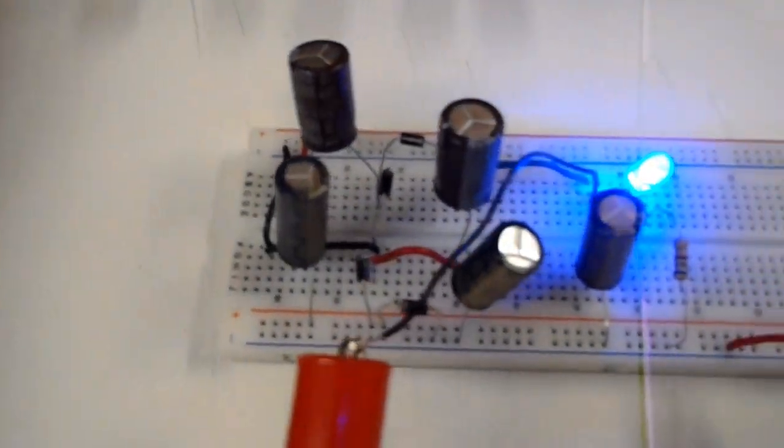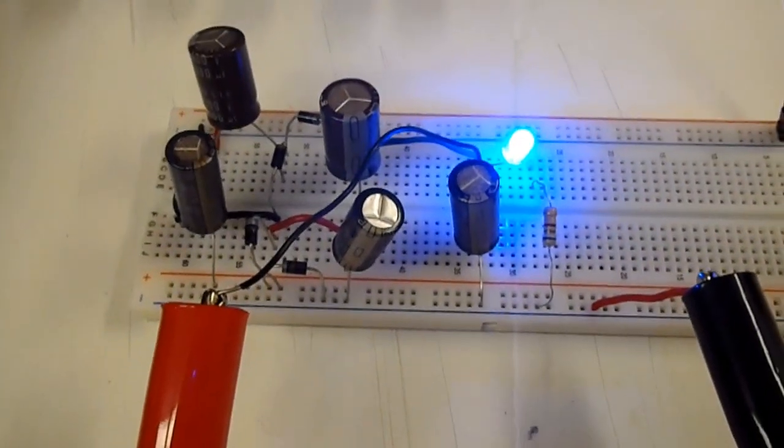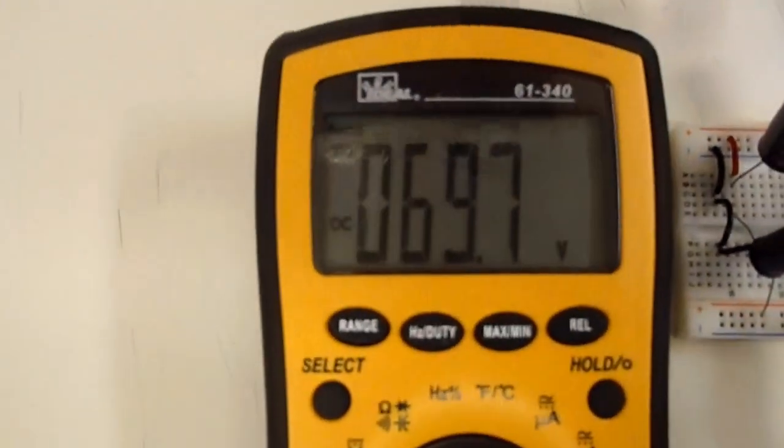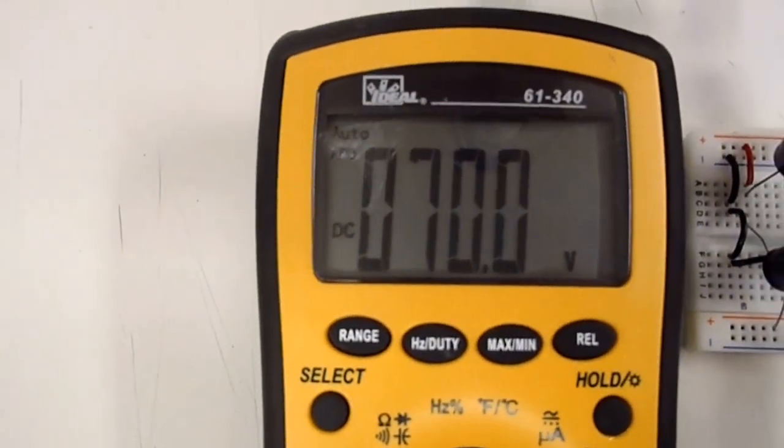So it's very basic, and our load here is just a blue LED and a current limiting resistor. Our voltmeter over the load says we have 69.8 volts, so almost 70.